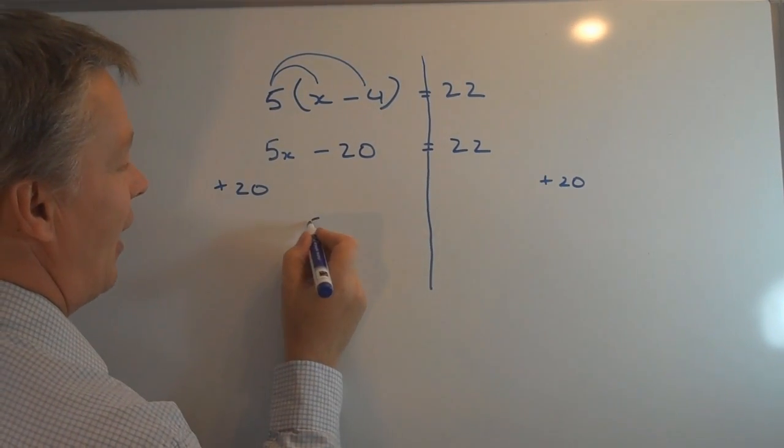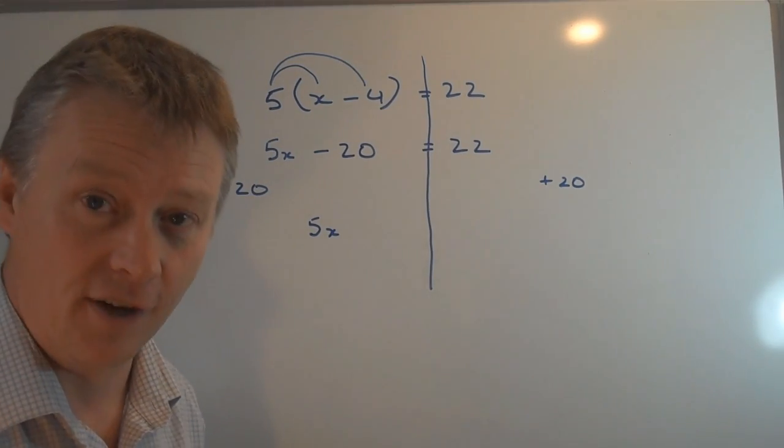And what I'm going to do is cancel those two out because minus 20 plus 20 is zero. So on this side, I now have 5x on its own.